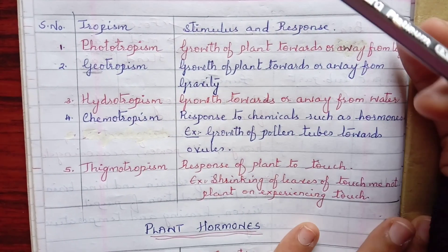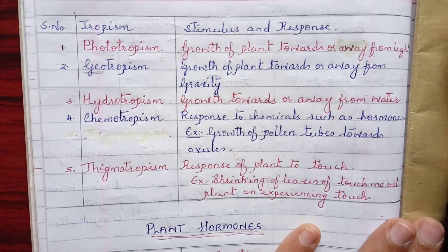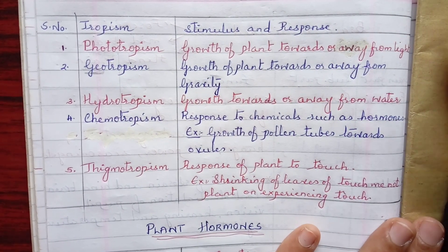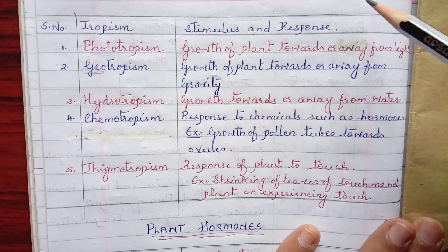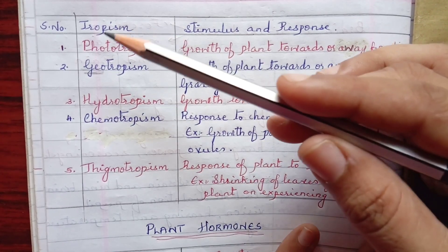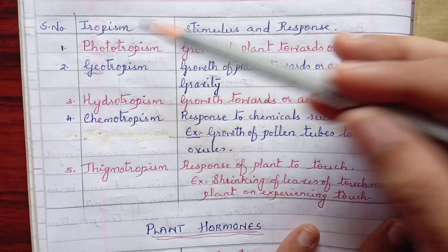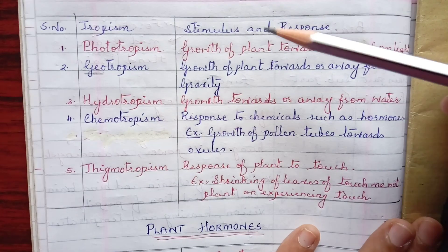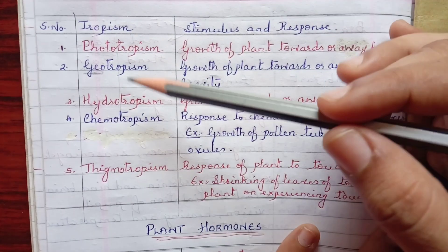Now, movement due to growth — or what we specifically call tropism. I have drawn a table with serial number, tropisms, stimulus, and response.